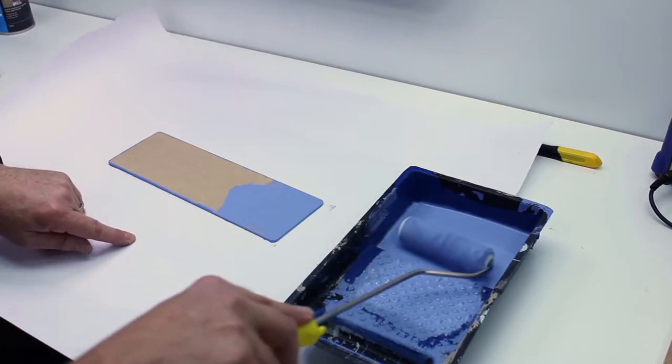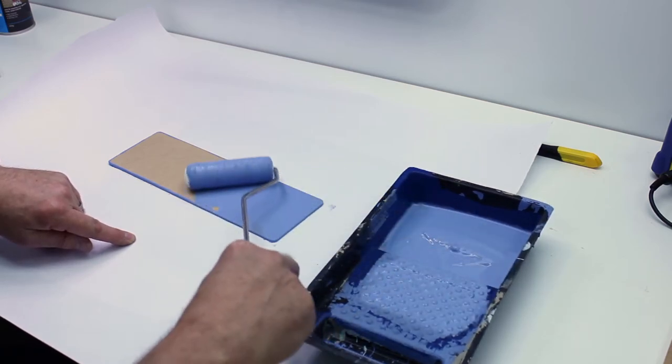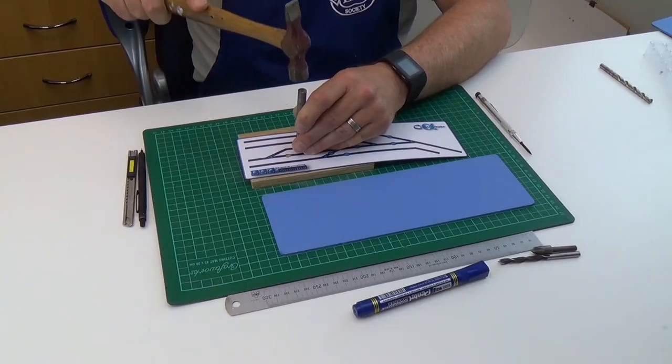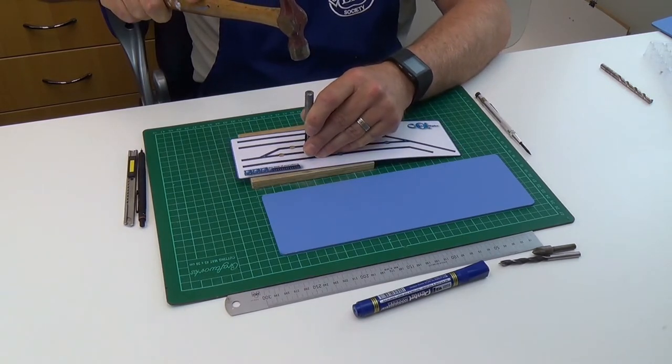In part one we made the panel base out of three millimeter MDF and painted both sides as well as the edge. The track plan was suitably laminated and is now ready to be fixed to the panel.